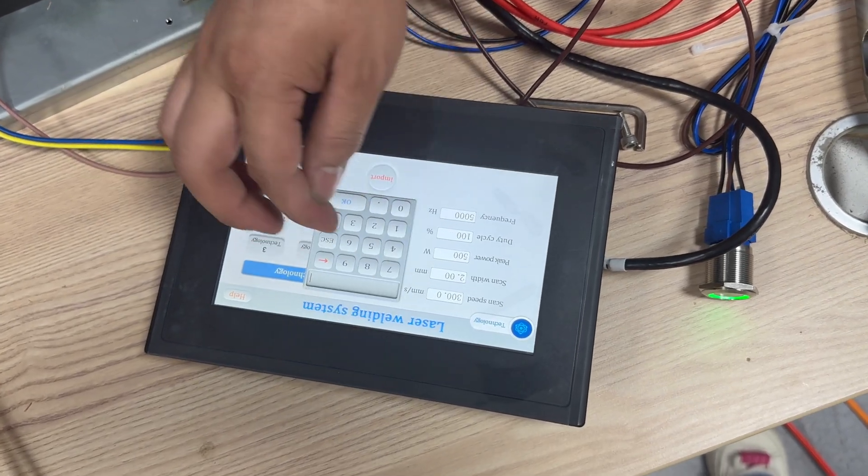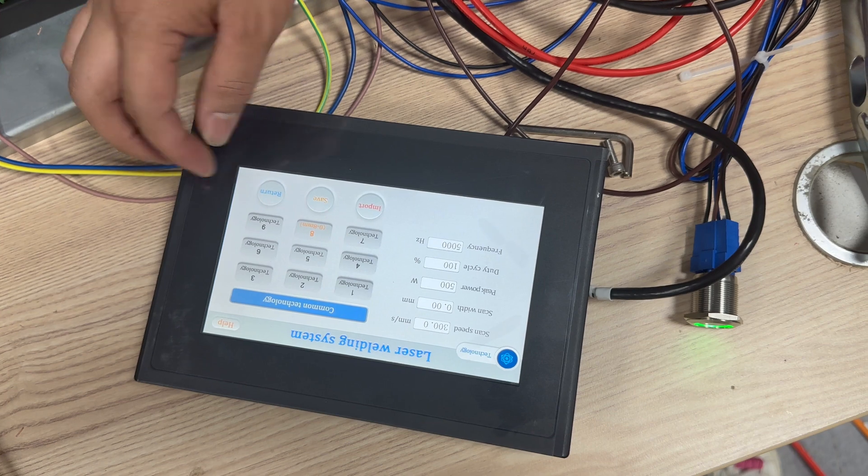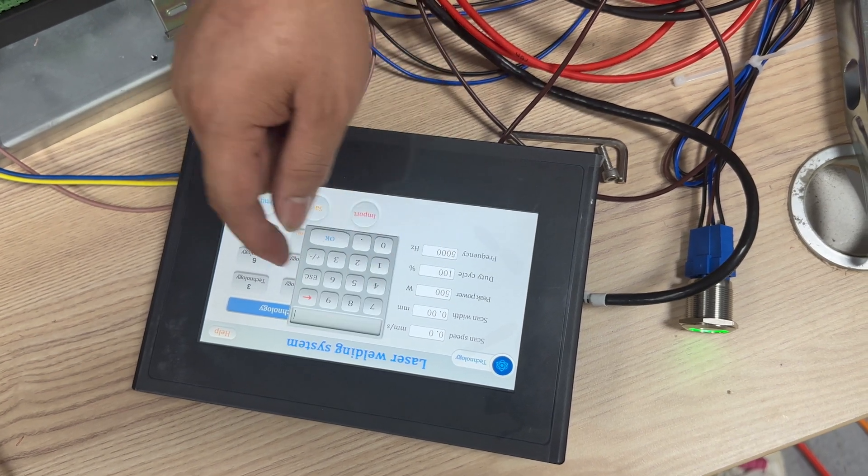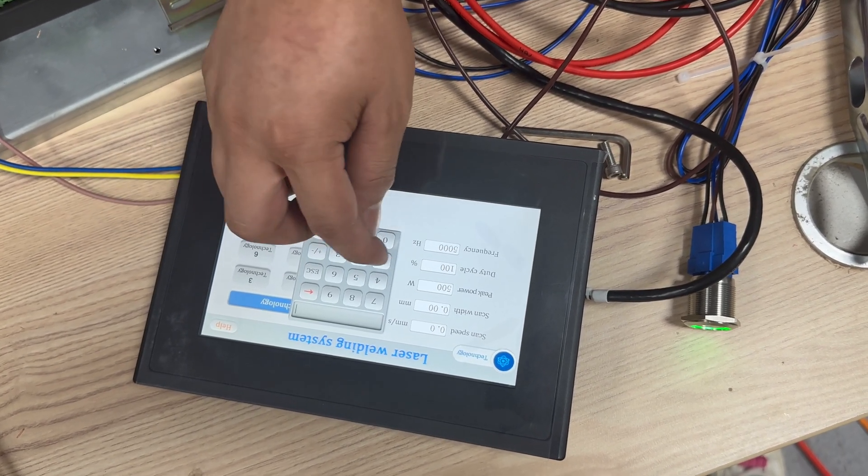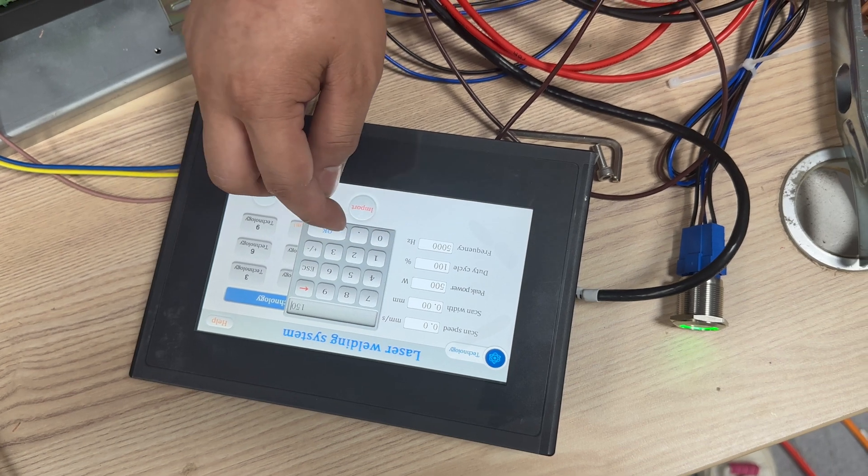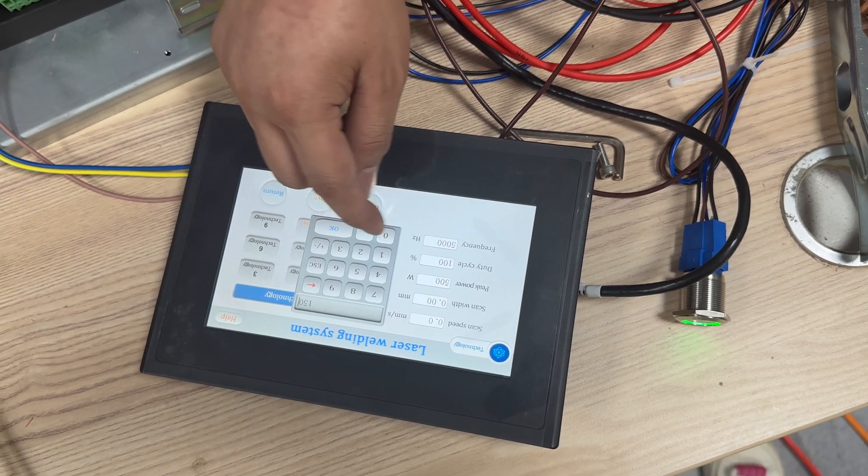Set the scan width to 0, set the power to full 1500 watts.